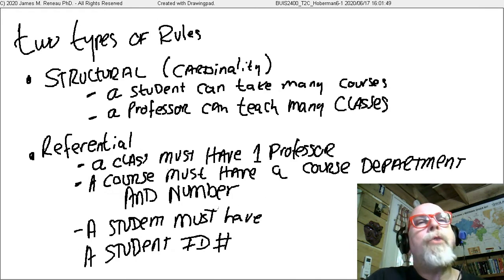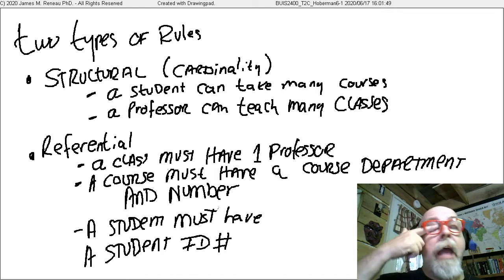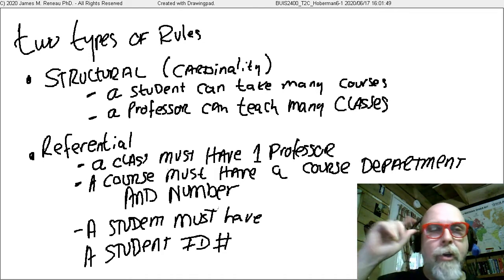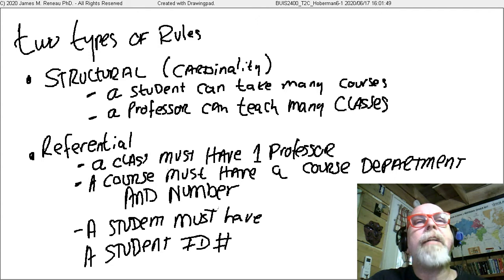There are two types of rules that relationships follow. One is known as the structural rule. Also, we call that the cardinality of the relationship. And the other is the referential rule. They're very related to each other. And if you have your cardinalities correct on a relationship, the referential rules kind of take care of themselves.